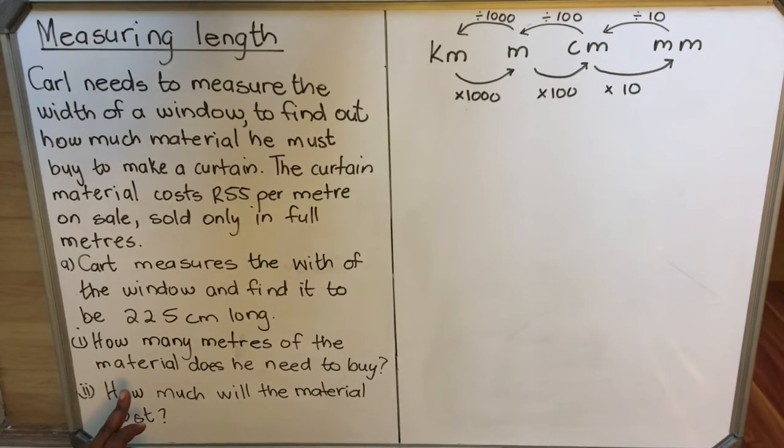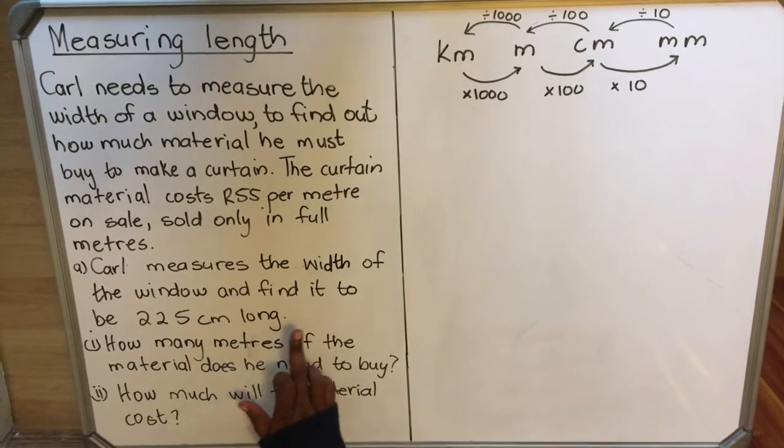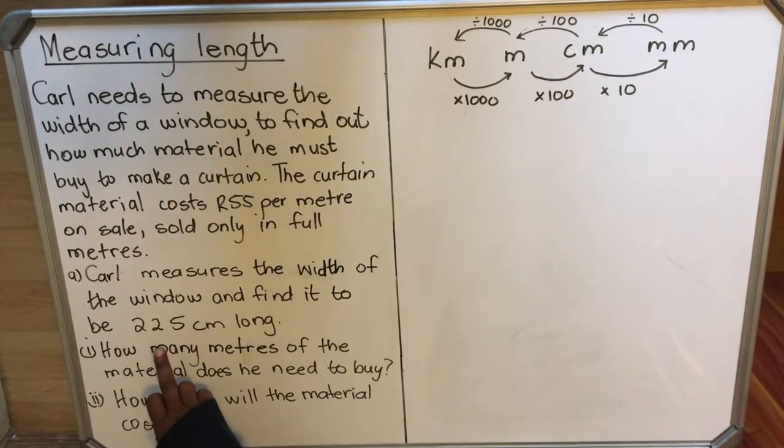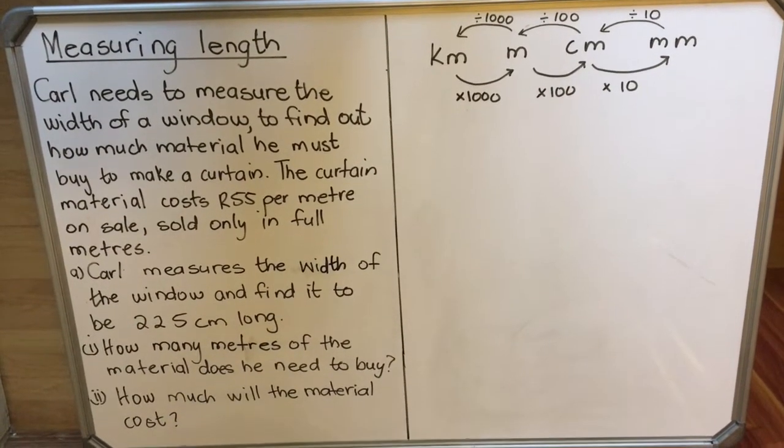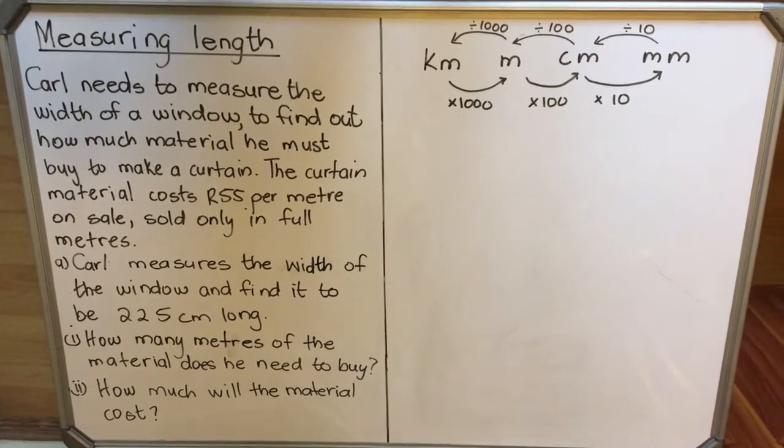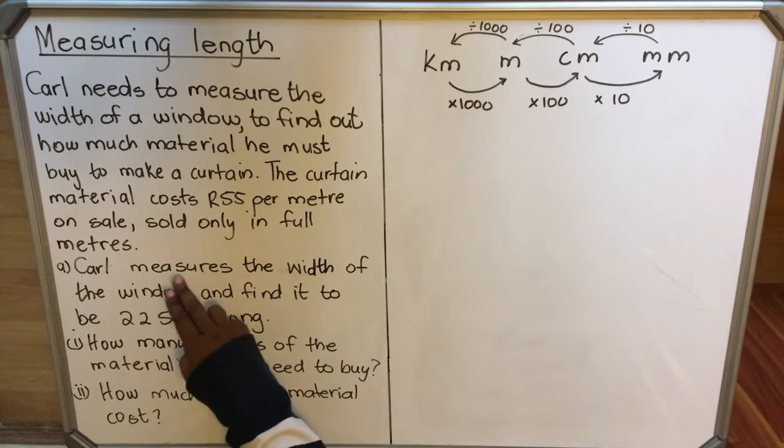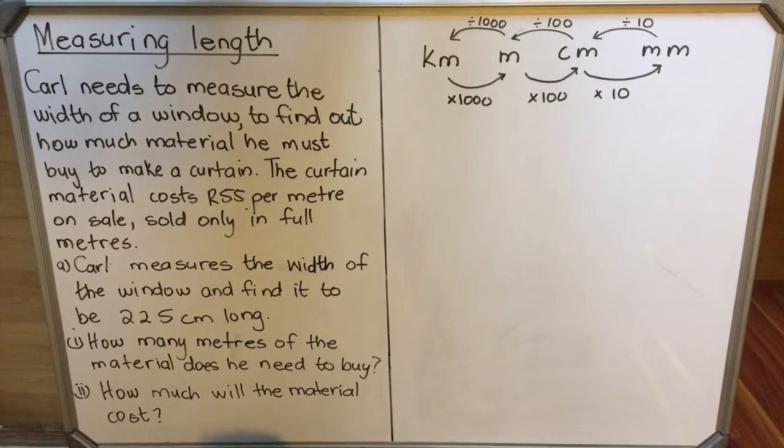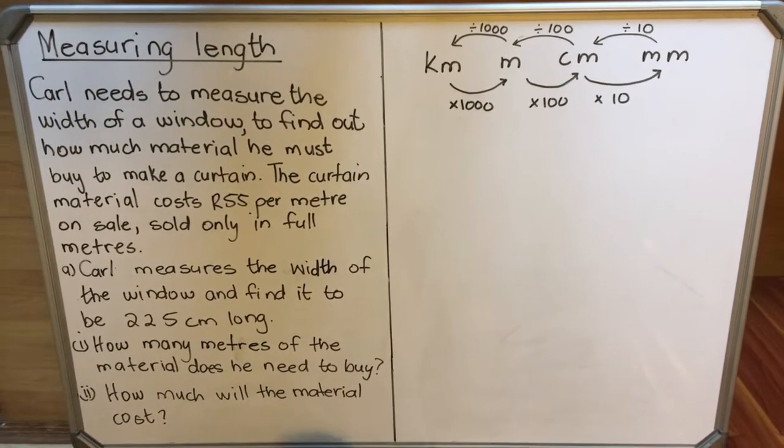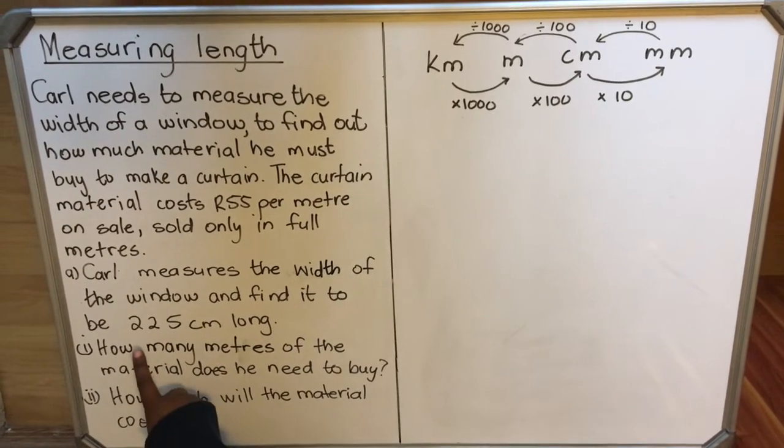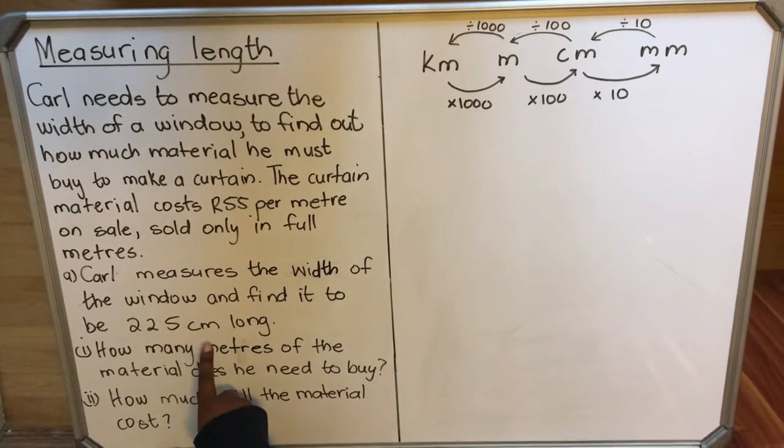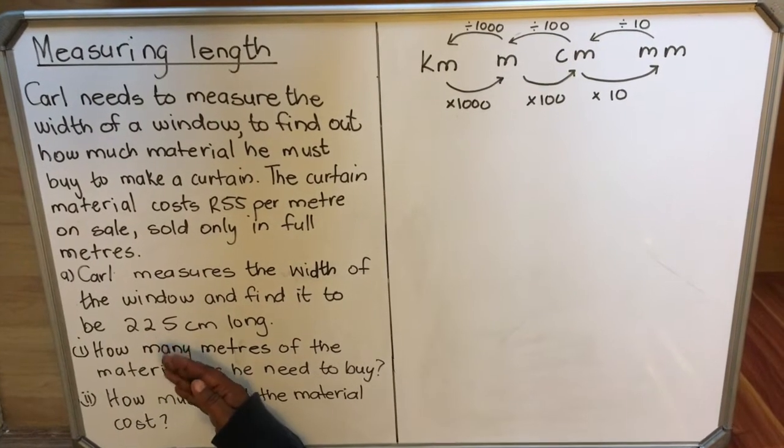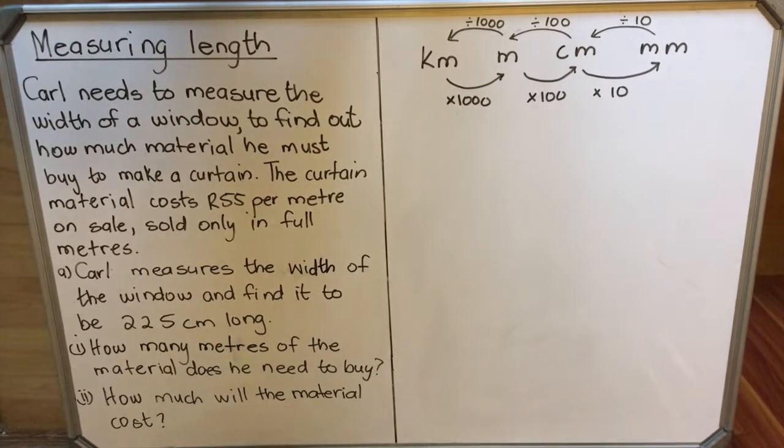The first question says Carl measures the width of the window and finds it to be 225 centimeters long. Our first problem: the material is sold in meters and when he was measuring it he used centimeters, maybe a tape measure that has centimeters. So he got 225 centimeters. We need to convert these centimeters to meters to be able to see how much he's going to buy.